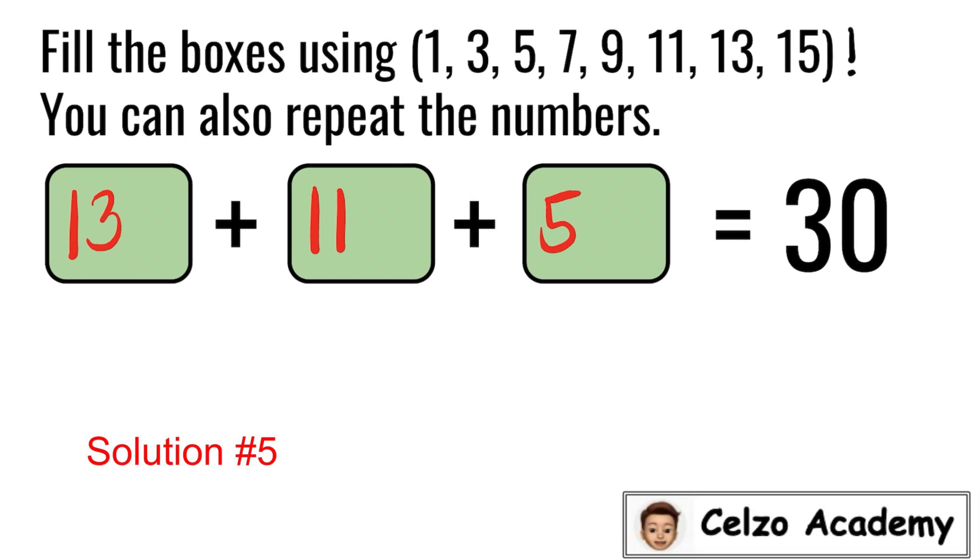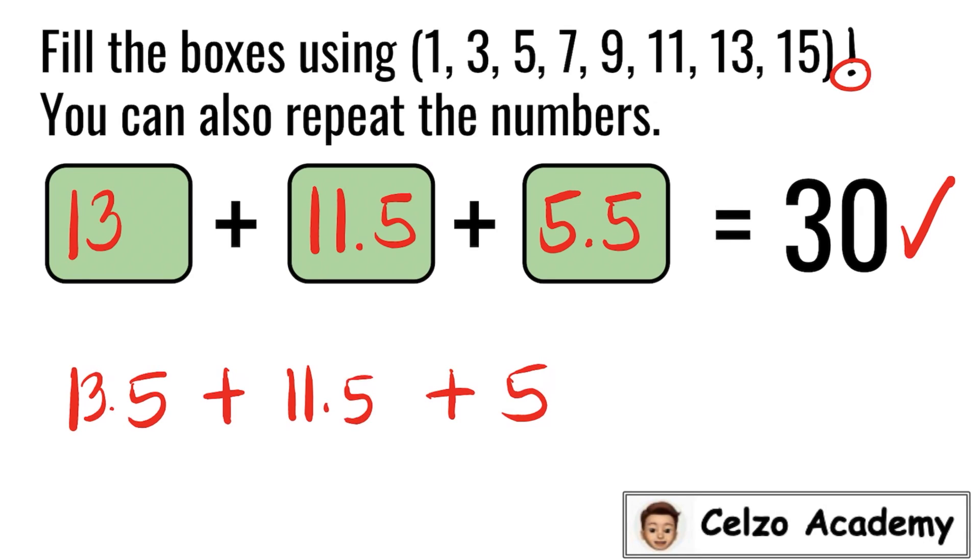I will make 5 as 5.5 and I will make 11 as 11.5. We are allowed to use a decimal point as it's indicated right here. So 13 plus 11.5 is 24.5. 24.5 plus 5.5 is 30. You can also change the position of 0.5. So this means you can also have 13.5 plus 11.5 plus 5. That's still 30. Or you can have 13.5 plus 11 plus 5.5, which is also 30. Do you agree with these solutions?